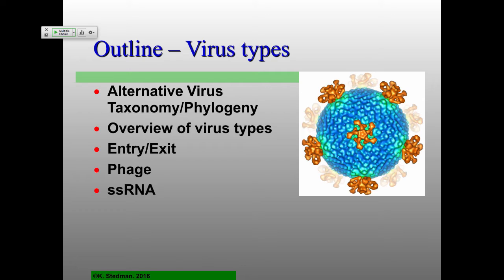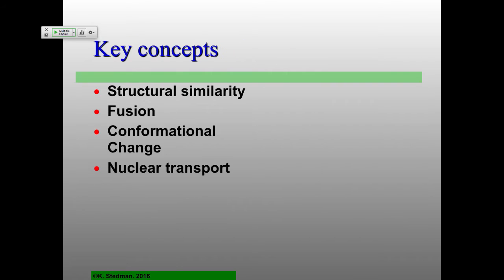We'll do a brief overview of the various different virus types — kind of a review for everything coming after this in the rest of the course. Most of today we'll talk about virus entry and a little bit about virus exit. This is a very broad overview. And then if we get there, we'll talk about bacteriophage, particularly single-stranded RNA bacteriophage, which are some of the simplest viruses out there.